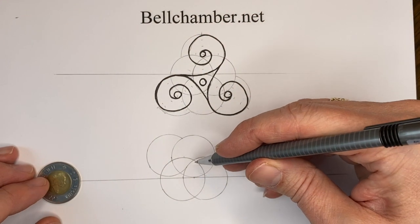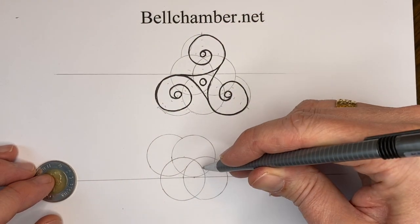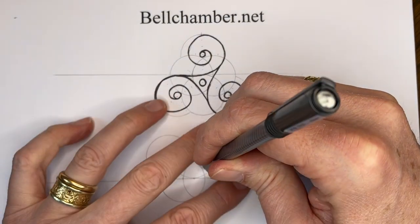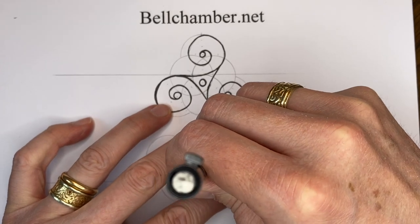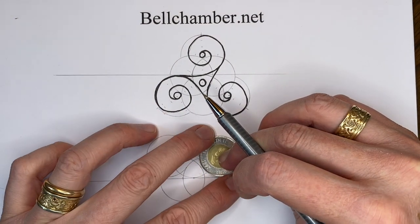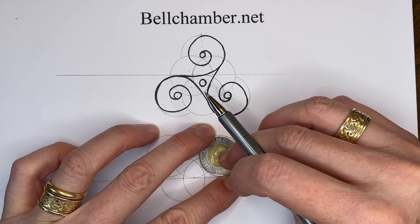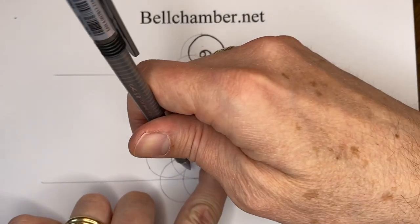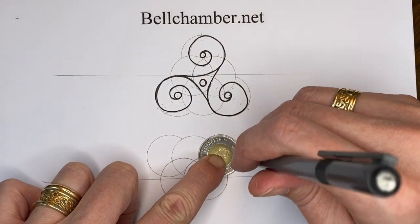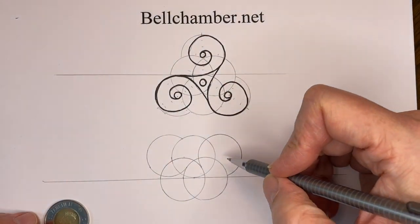So we're going to do that again on this side. We're going to approximate it right there. Put my pencil here, bring down the coin. I want to see that these two are as even as they can get. And I'm going to make that arc.